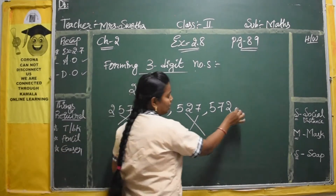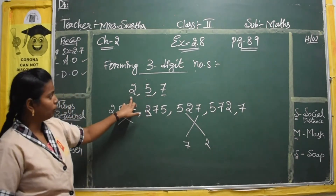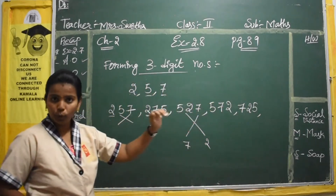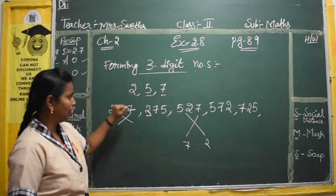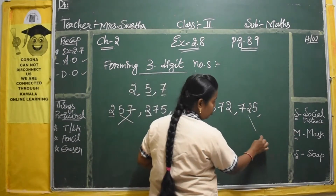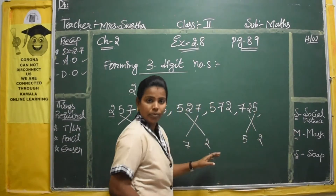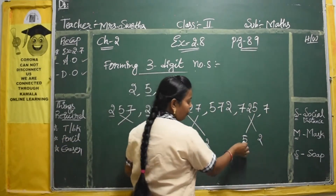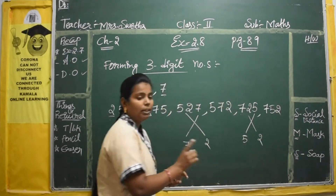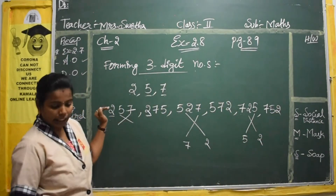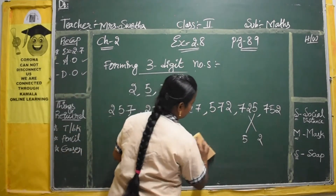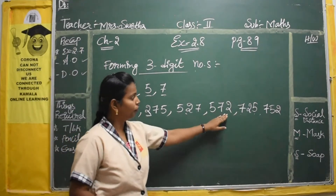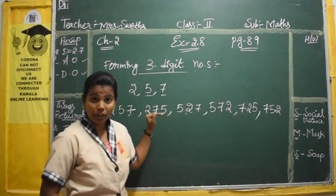Now take the last number, 7, as the first number. With the other two numbers 2 and 5: 7, 2, 5 gives 725. Then do the zigzag — this 2 goes outside and 5 goes inside — giving 7, 5, 2 which is 752. Now see how many sets we have made: 1, 2, 3, 4, 5, 6 — six sets of numbers total.